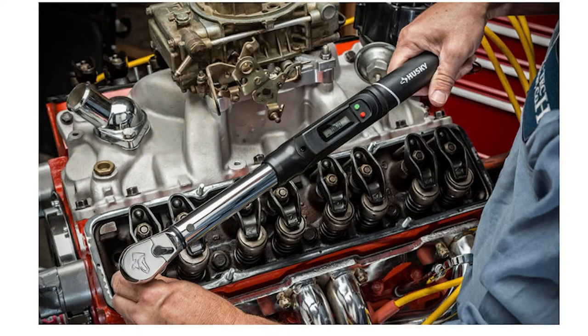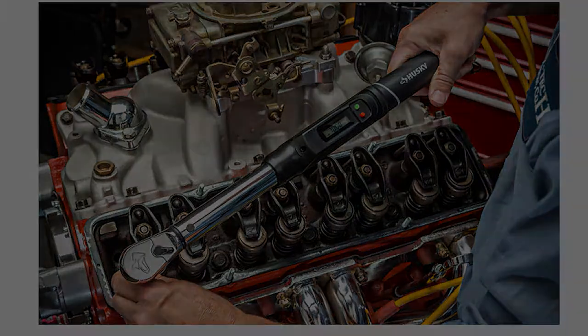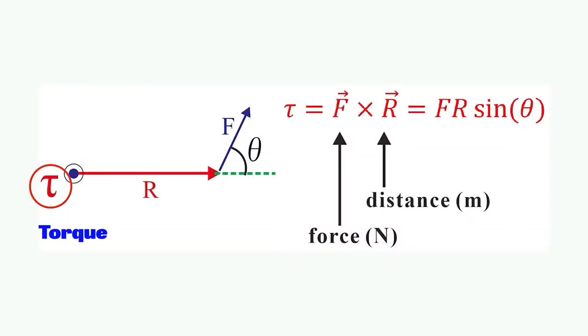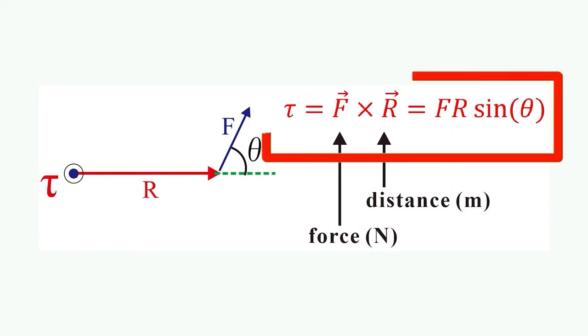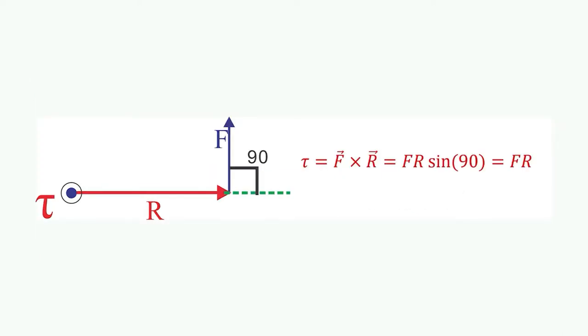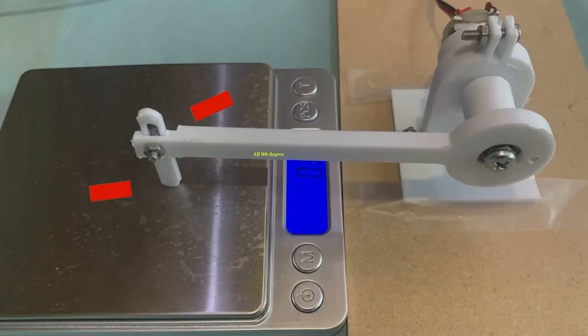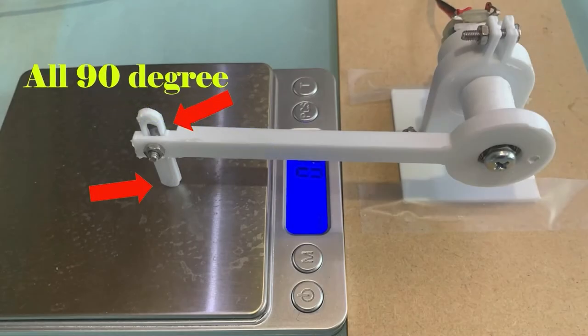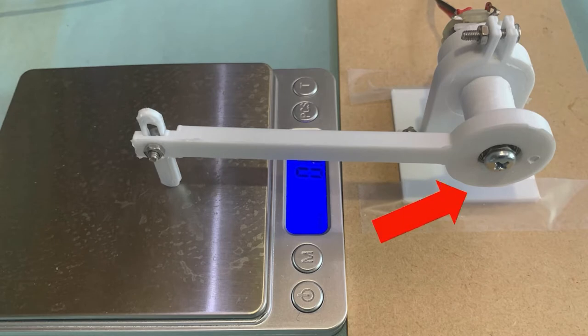It is very useful when you fix screws or nuts if very precise torque is needed. Torque is a vector quantity, meaning it has both a direction and magnitude. It is calculated by multiplying force and distance. If the angle is equal to 90 degrees, it can be measured by using a digital scale with this simple construction.